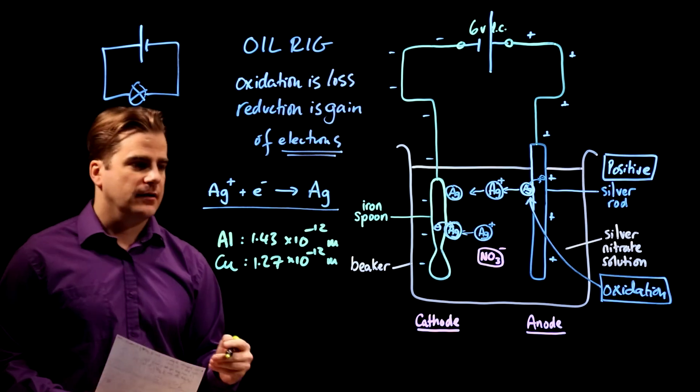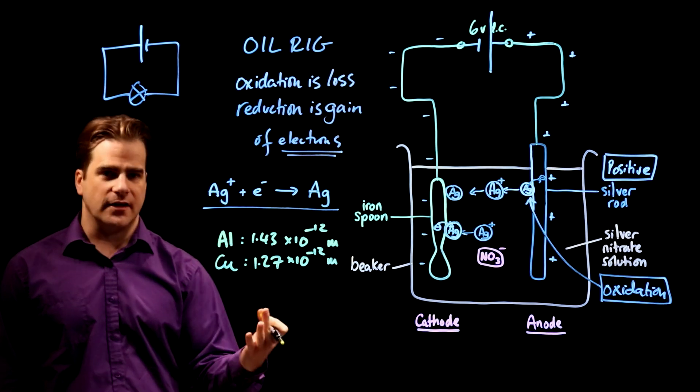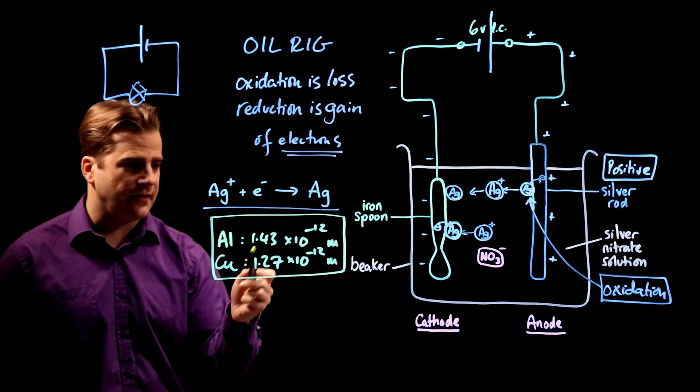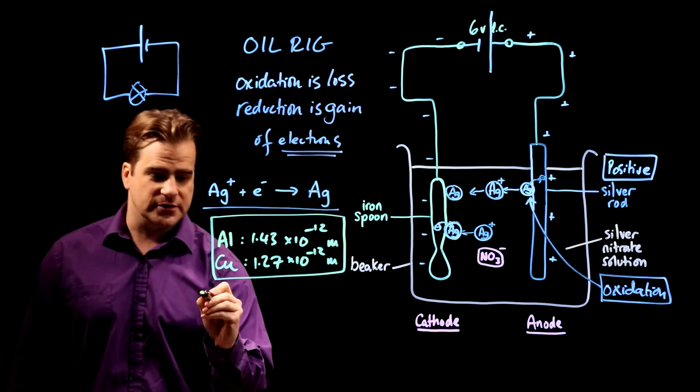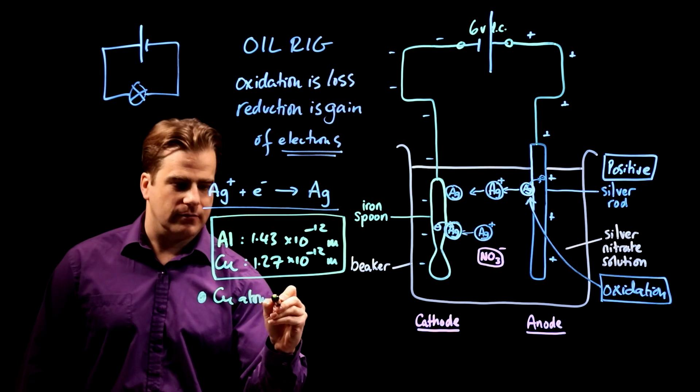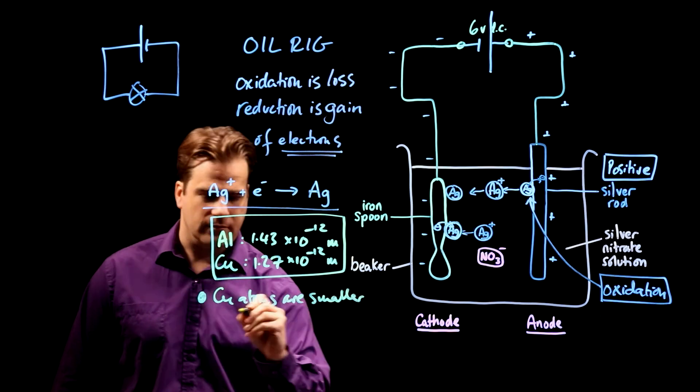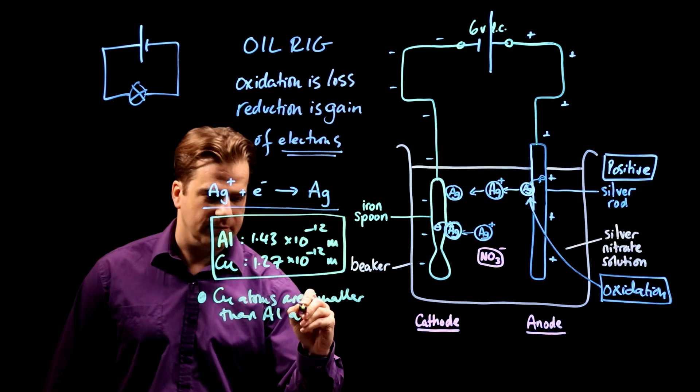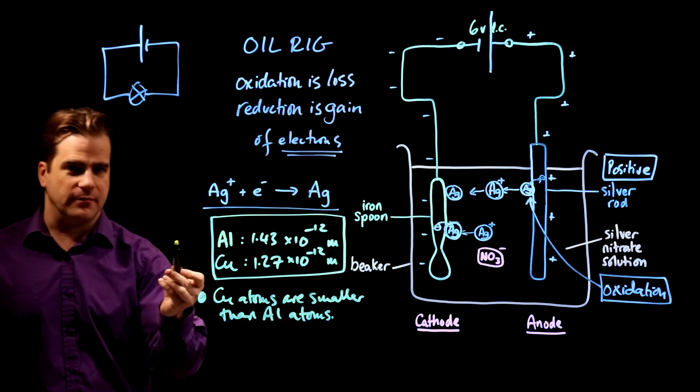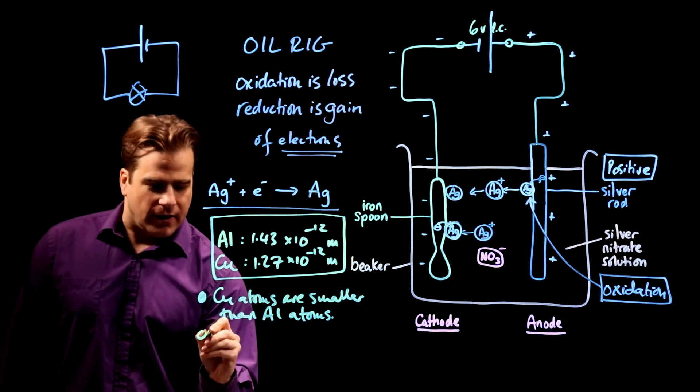Like I always say, you often get marks on these sort of things for saying the obvious. They've given you this. So what's the obvious thing that they're getting at here that we should say? Well, we should quite simply say copper atoms are smaller than aluminium atoms. Write it out in full sentences. Write out the word copper and aluminium in your exam. I'm doing it short term. Right. Here we've got one mark straight away.